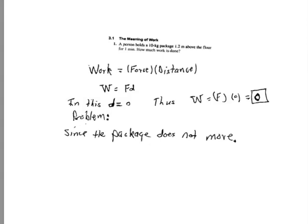All right, so firstly, you see on this screen now is Problem 1. A person holds a 10 kilogram package 1.2 meters above the floor for one minute. How much work is done? Okay, so firstly then, recall the equation for work. Work is equal to the force in magnitude in a given direction times the distance that it moves while being observed.